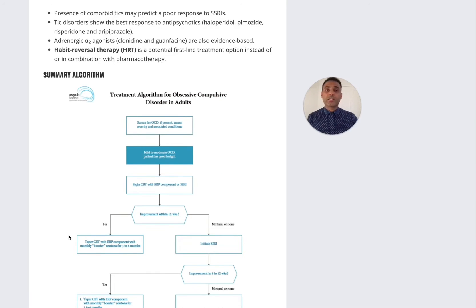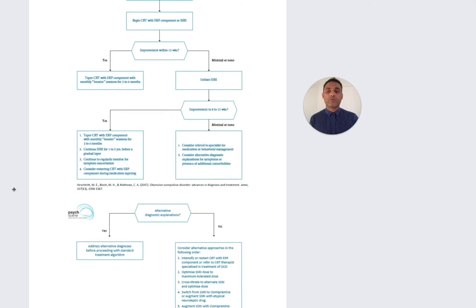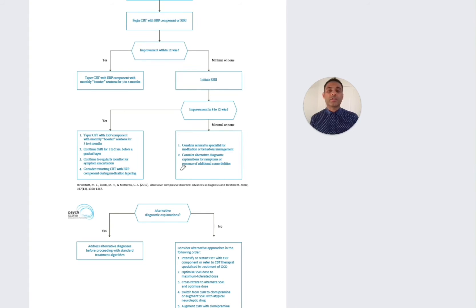Let's go through the summary algorithm. For mild to moderate OCD, you can start with either exposure response prevention or an SSRI and wait for response for approximately 12 weeks. If they respond, you can taper the SSRI — though recommendations are that medication should be continued for at least one to two years before tapering. CBT with the ERP component can be tapered with monthly booster sessions for three to six months. If the patient hasn't responded and you started with ERP, then initiate an SSRI. If there is minimal or no response, consider a referral to a specialist for medication or behavioral management, and rule out additional comorbidities and alternative diagnostic explanations.